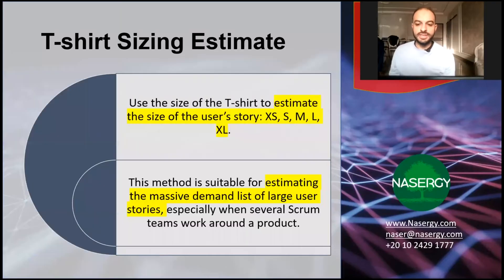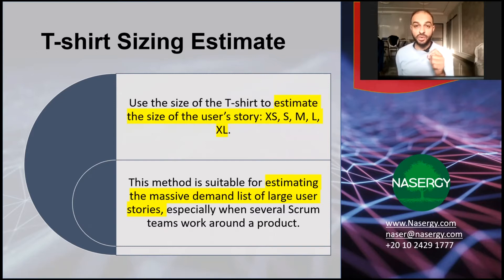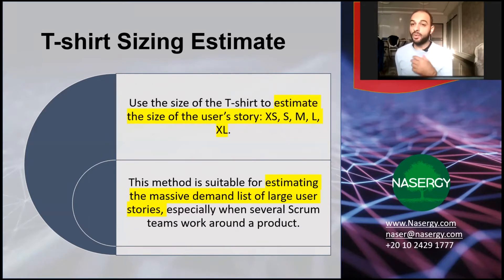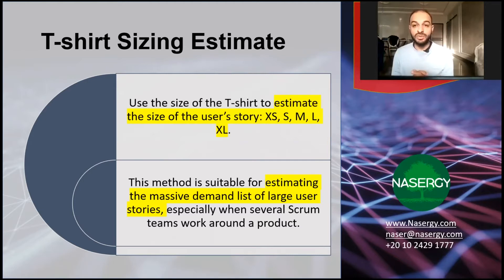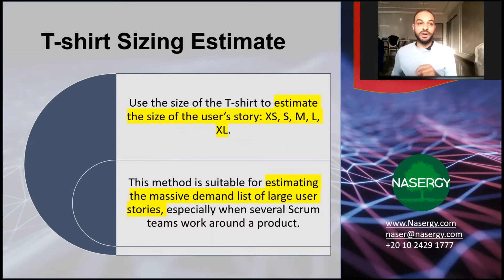T-shirt sizing is used in agile projects to estimate the amount of work to be done. It's used to estimate user stories — a user story is a group of work to be done by the team. To estimate this work, you consider the effort required and the resources needed. A nice way to estimate this is to say: is it extra small, small, medium, large, or extra large? Similar to how you select your t-shirt size.